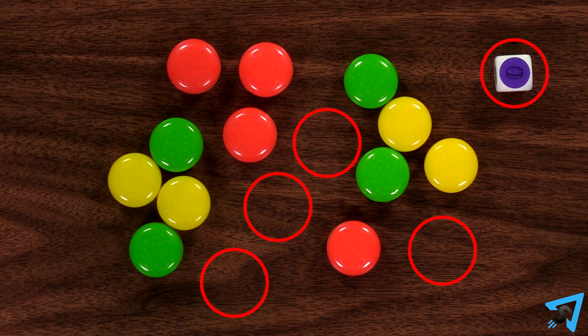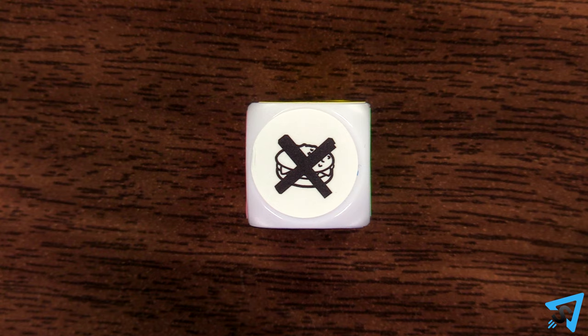If there are no more burgers in that color, do nothing and end your turn. If you roll the X'd out burger, skip your turn.